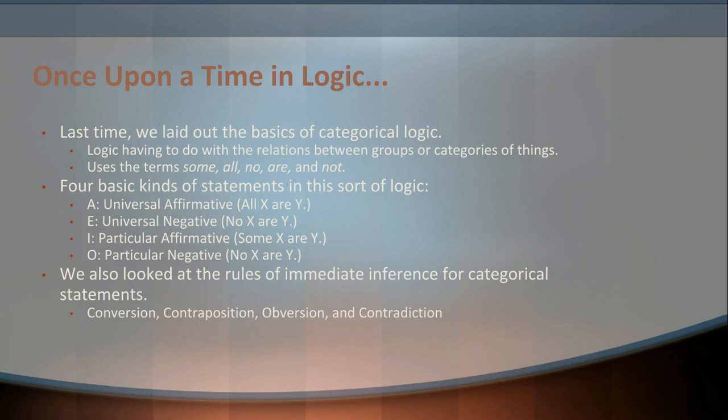Categorical Logic uses four basic kinds of statements: the A, E, I, and O statements we discussed last time. These are: the Universal Affirmative — 'all X are Y'; the Universal Negative — 'no X are Y'; I, the Particular Affirmative — 'some X are Y'; and the Particular Negative — 'some X are not Y.' That last one needs a correction: the Particular Negative should read 'some X are not Y,' so please correct that in your notes.